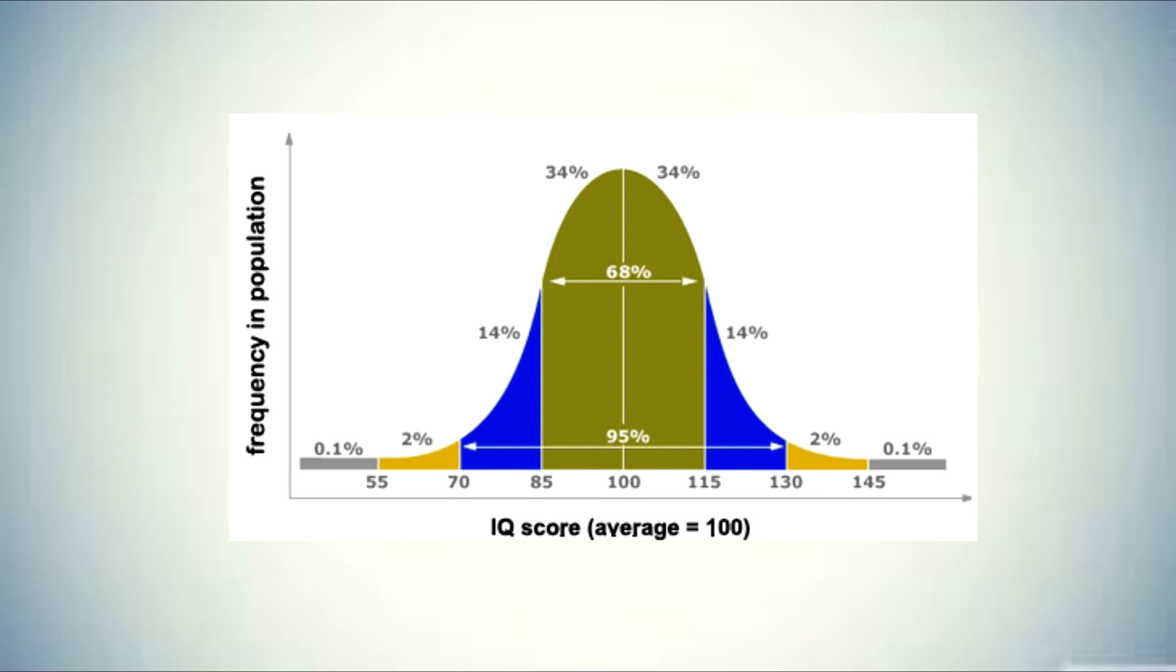Here you can see a bell curve of the approximate IQ scores. Most of them are around 100. An individual with a score of around 70 is considered less gifted and around 130 is considered highly intelligent.